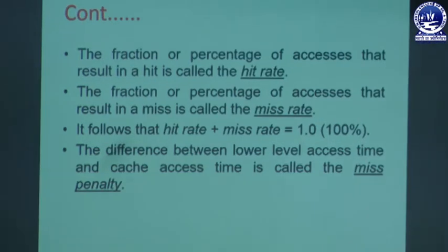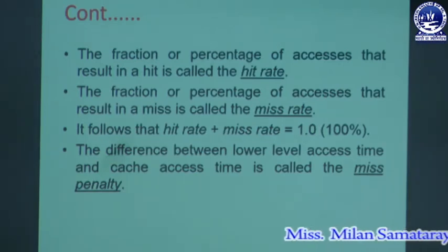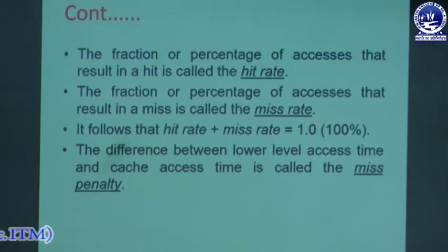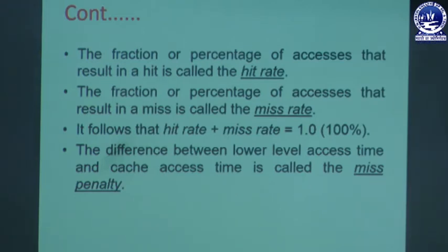If the requested data is not present in the high-level cache nearest the processor, that is a miss. At that point you go to the lower-level cache, and when the cache miss occurs at the first level, you calculate the cache access time because it has to search the entire cache for the requested data, consuming some time. The difference between the lower-level access time and the cache access time is the miss penalty.